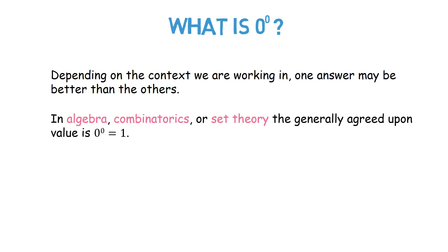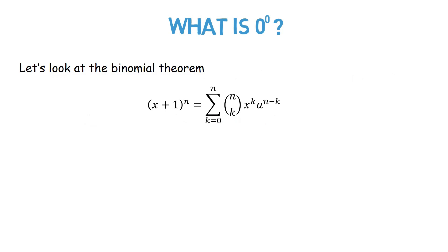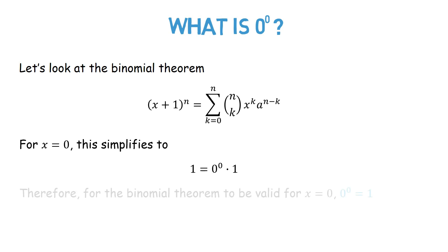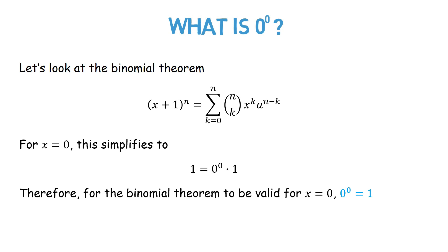In algebra, combinatorics, or set theory, the generally agreed upon value is 0 raised to 0 equals 1. For example, looking at the binomial theorem: for x equals 0, this simplifies to 1 equals 0 raised to the power of 0 times 1. Therefore, for the binomial theorem to be valid for x equals 0, 0 raised to the power of 0 should be 1.